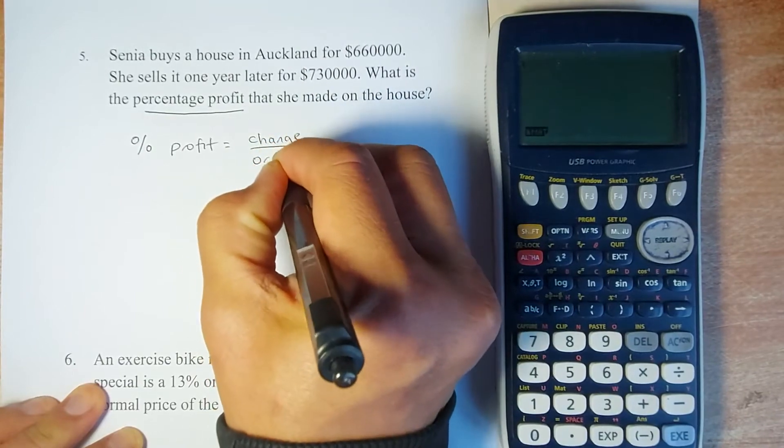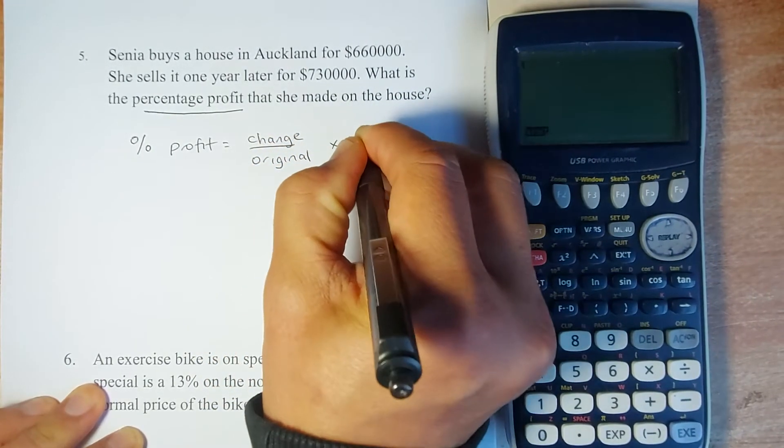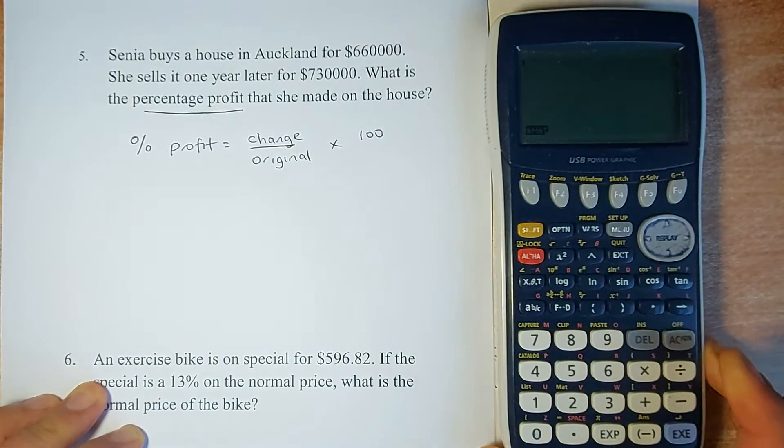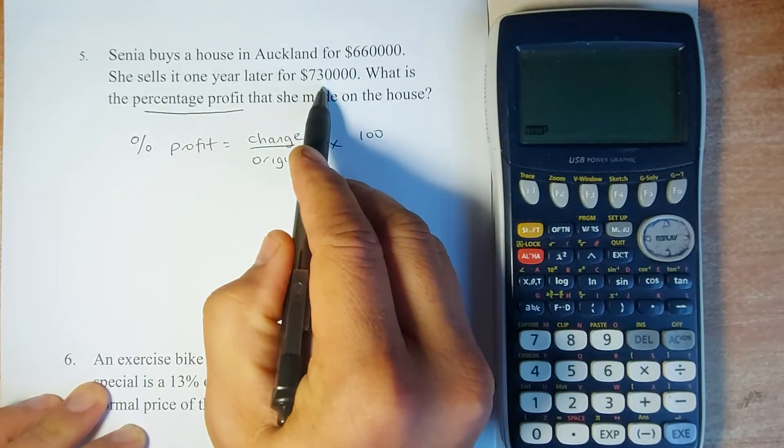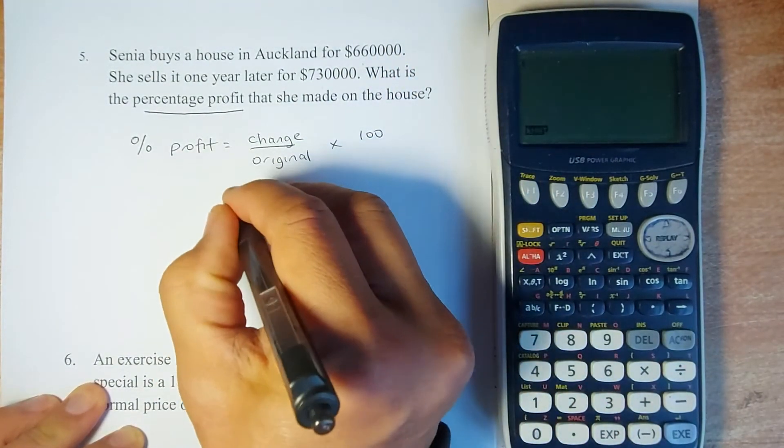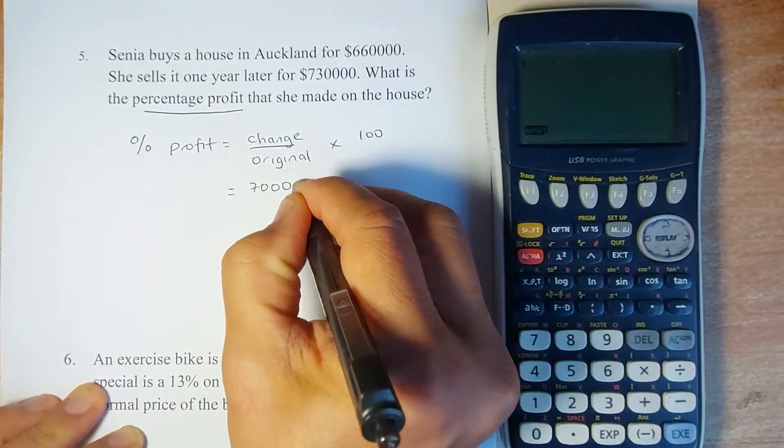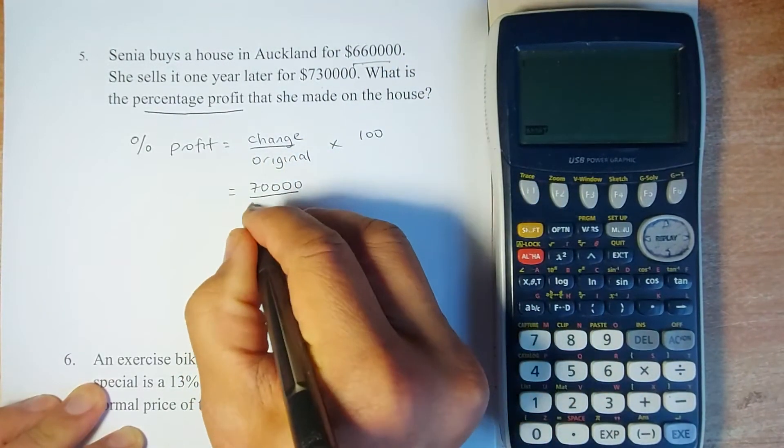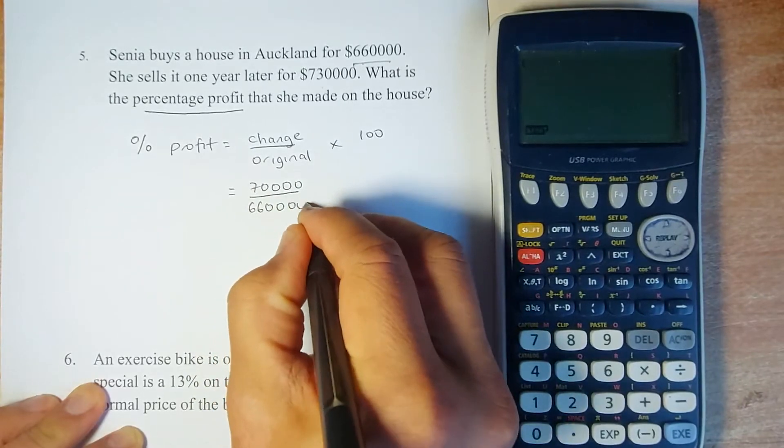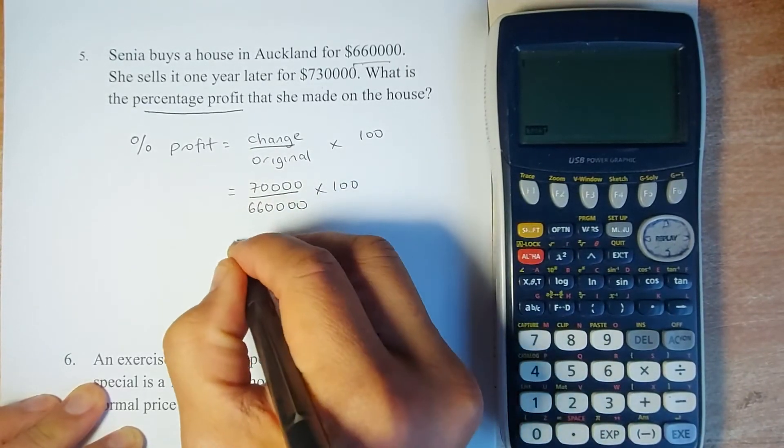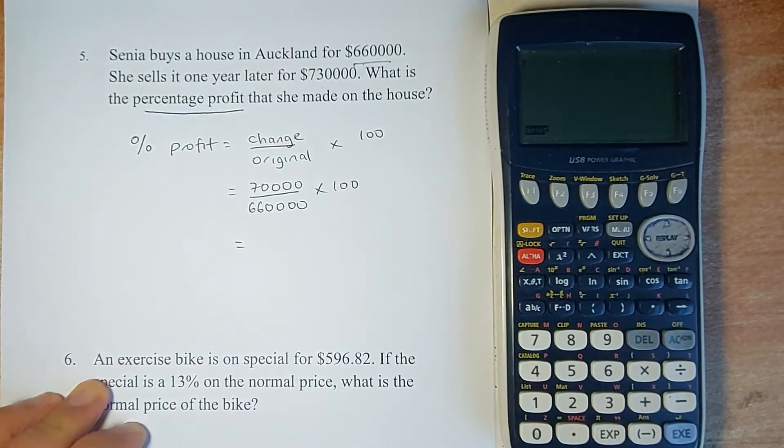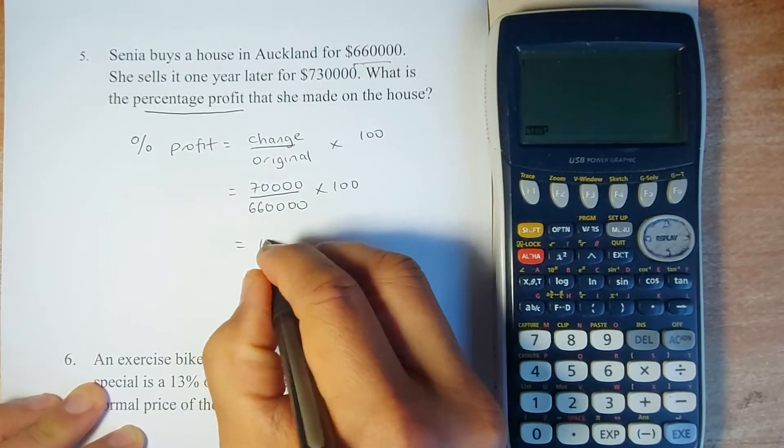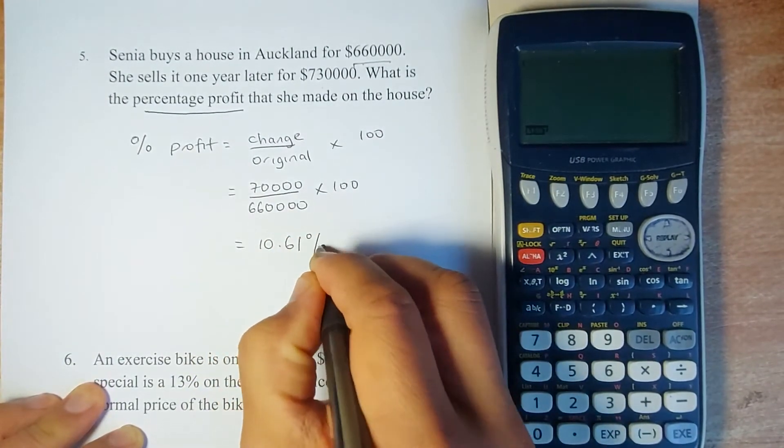The change is 730 minus 660, which is $70,000. You divide by the original amount, which is $660,000, and multiply by 100. If you put that in your calculator, the answer is 10.61%. That will give you two marks in the exam.